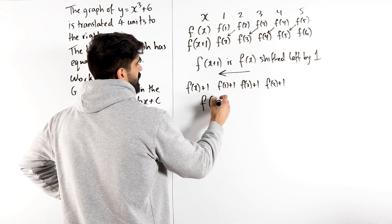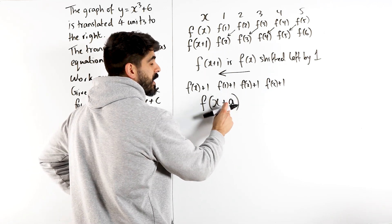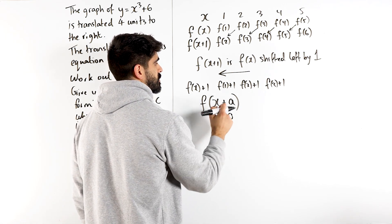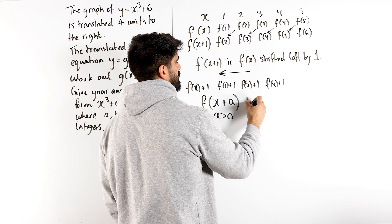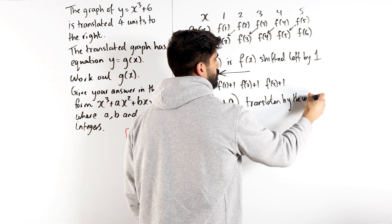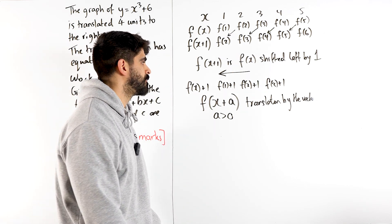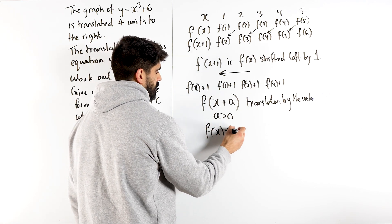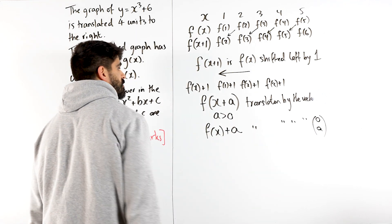So, in general, if we have f of x plus a, where a is a positive number, let's just say a is strictly positive. So x plus 1, x plus 2, x plus 3. We are, the technical phrasing, is a translation. Translation by the vector. Then you do a column, and you're going to go to the left. So minus a, and nothing on the x, nothing on the y. That is a translation. If you have f of x plus a, that is a translation by the vector, here you're moving up by a. You're doing as it's told.